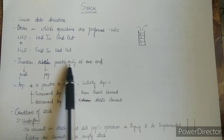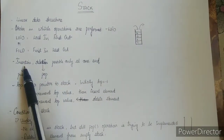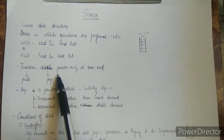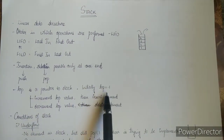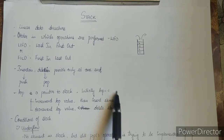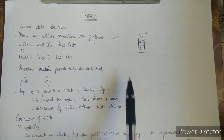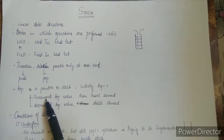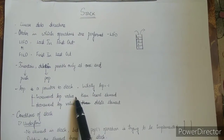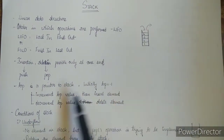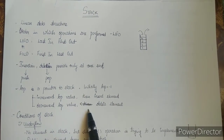Insertion and deletion is possible only at one end of a stack — that is the open end. Insertion is done through the push operation and deletion is done through pop. Top is a pointer to the stack, initially set to minus 1. Minus 1 means the stack is empty. To push, first increment top, then insert the element. To delete, remove the element and then decrement the top pointer's value.